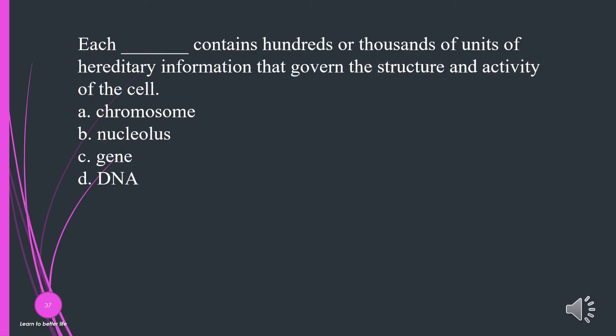Each what contains hundreds or thousands of units of hereditary information that govern the structure and activity of the cell? A. Chromosome. B. Nucleolus. C. Gene. D. DNA. The answer is A, chromosome.